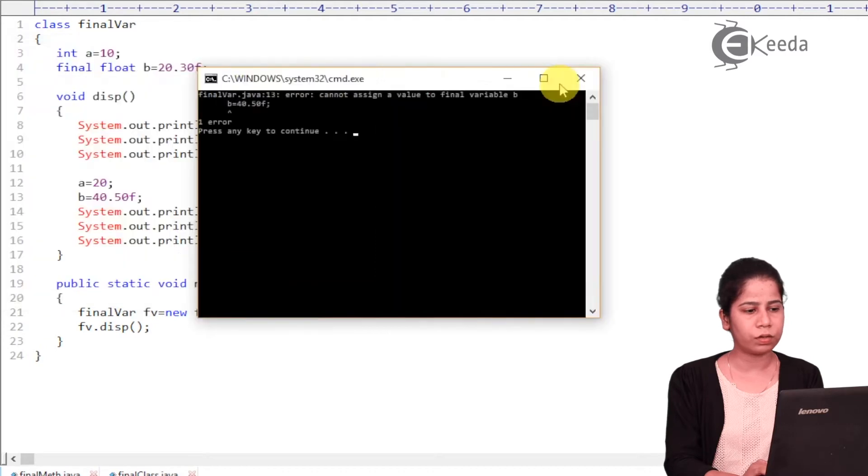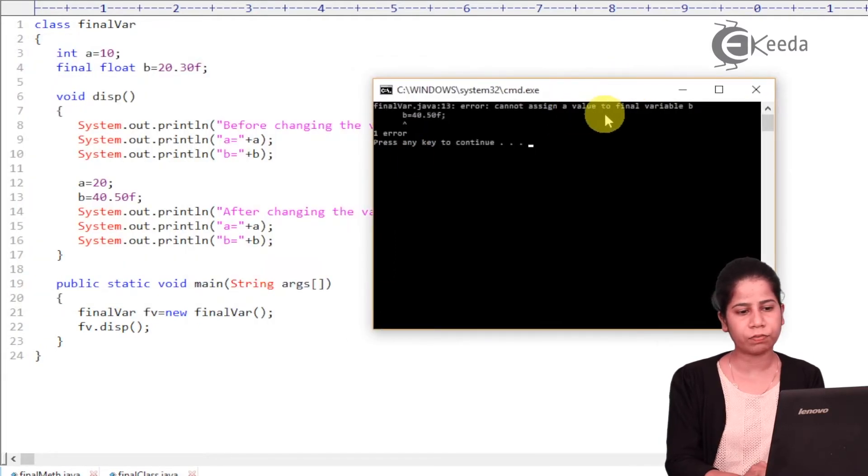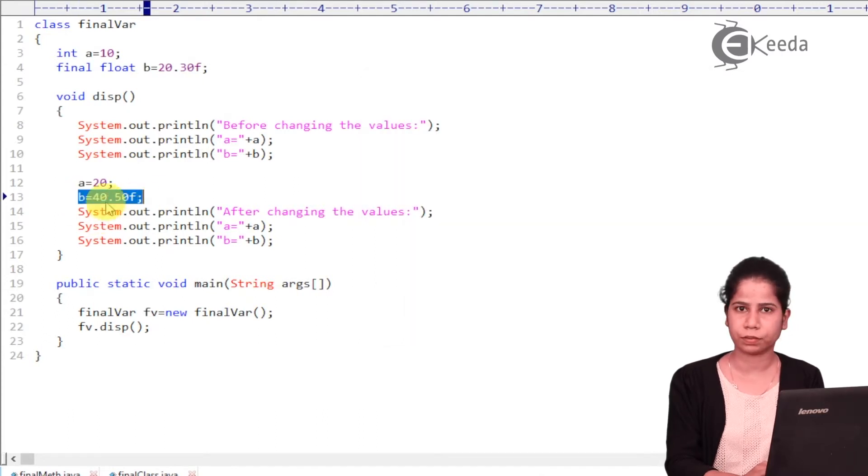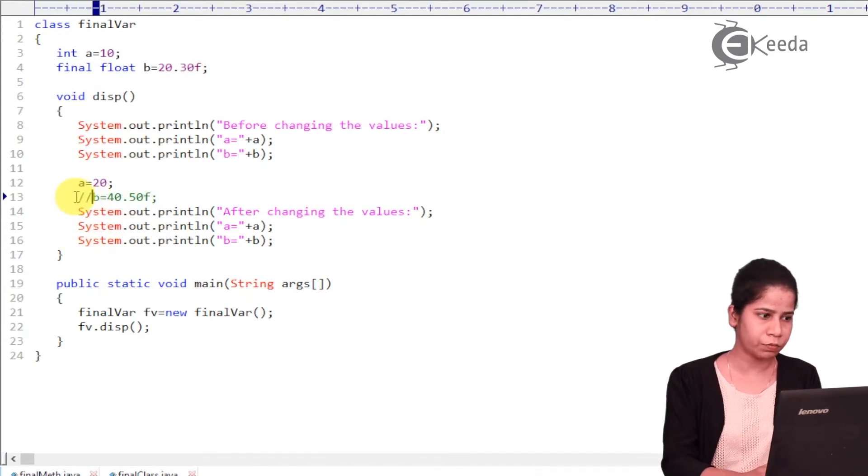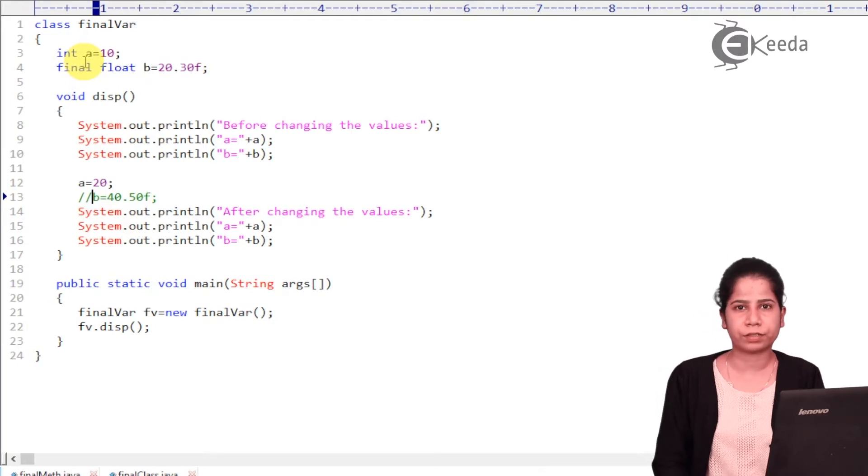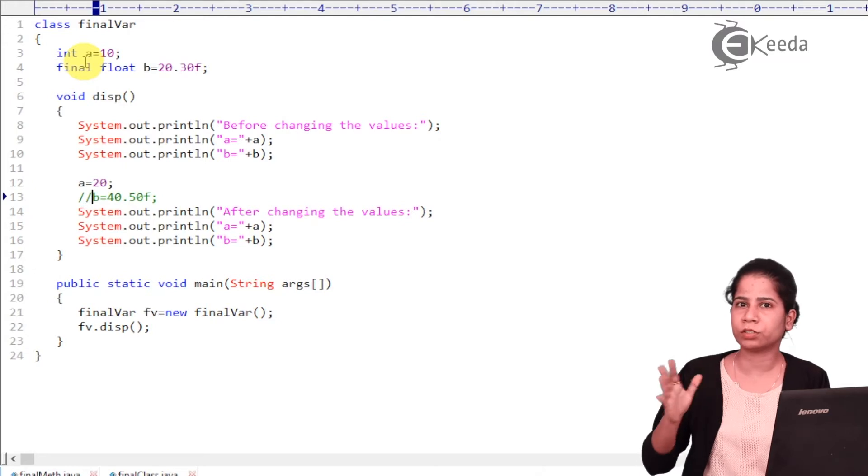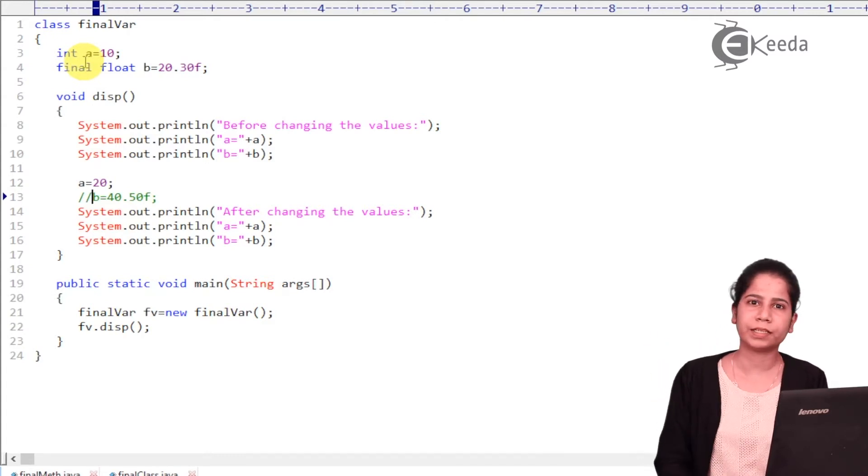So let's try to compile this. So I'm getting an error over here. What error? Cannot assign the value of the final variable b. That means you cannot be able to change the value of final variable. Is it clear everyone? So that is nothing but final variable value once given cannot be changed. So where we can use it? You know, in banks, we are having some interest rates. Now these rate values should not be modified frequently. It should be constant value. So if you have bank application and if you want that the interest rate should not be changed, then you have to make it as final.